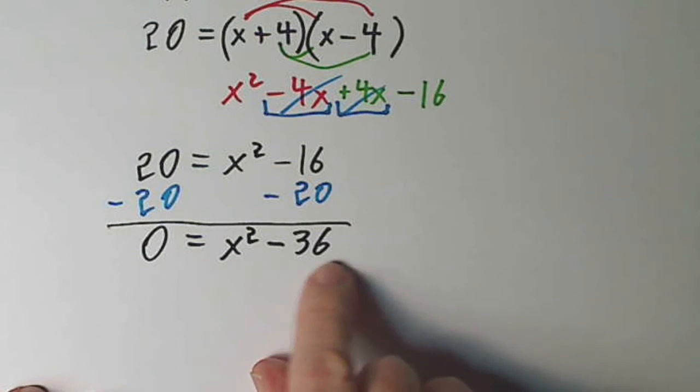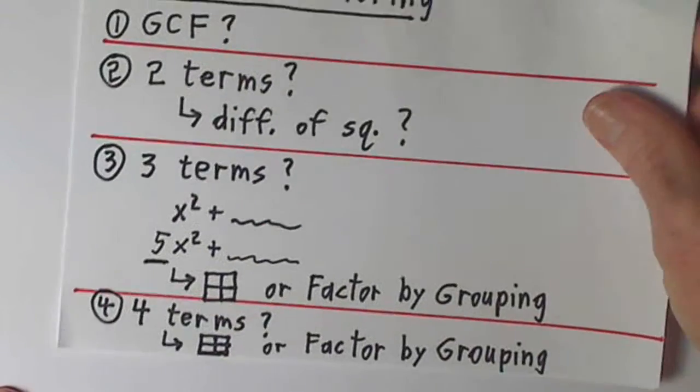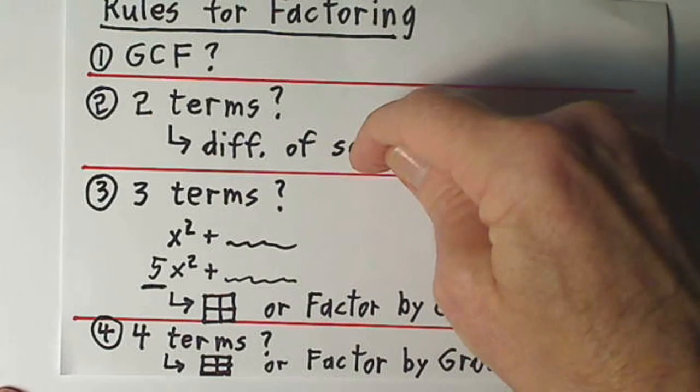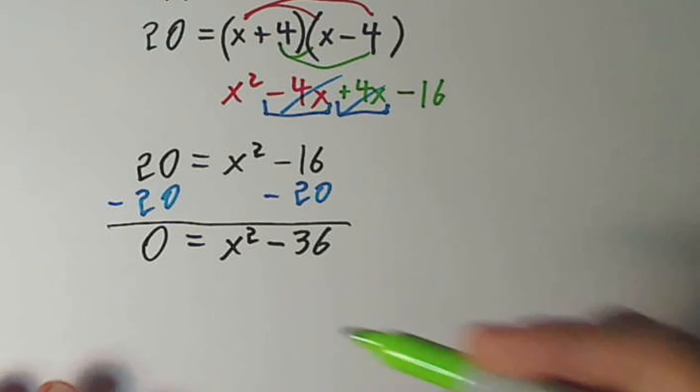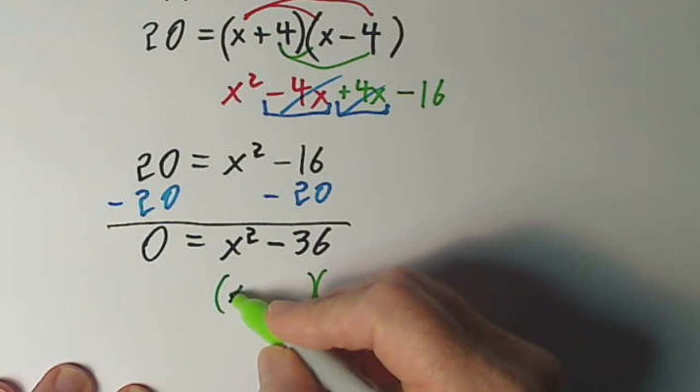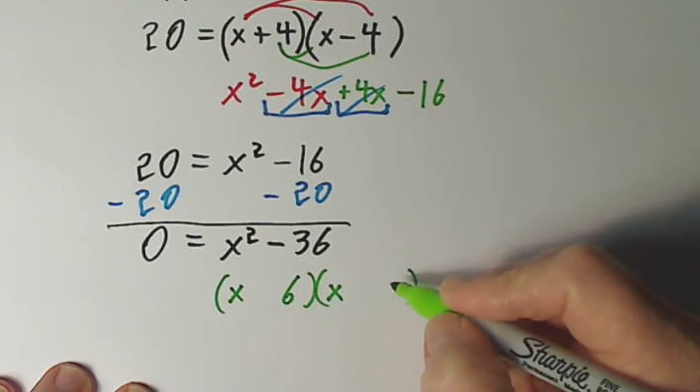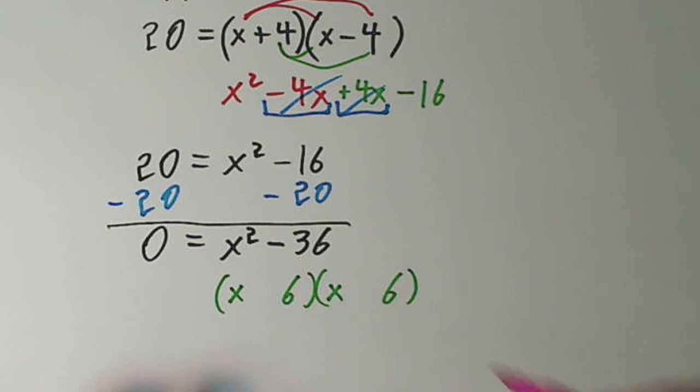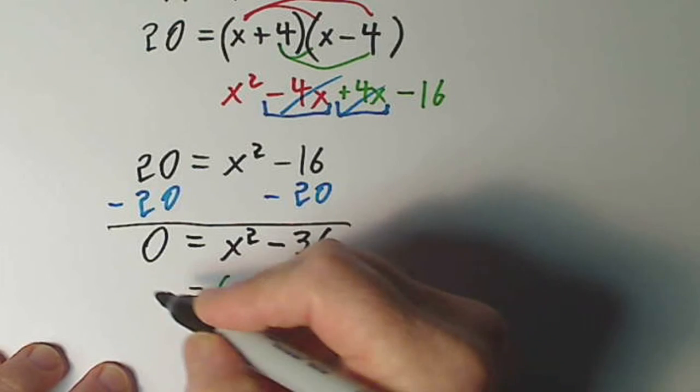Okay. If I can turn this binomial into something times something equals 0, I can use the zero factor property. Well, proceeding down our routine here, remember. GCF. No. Two terms. Yes. Difference of squares. Hey, we're in luck. Alright. We have a difference of perfect squares. So I can give myself two sets of parentheses. The square root of x squared is x and x. The square root of 36 is 6 and 6. Remember, you always have to alternate these signs, because that's what makes the middle term disappear.